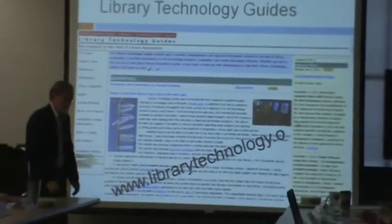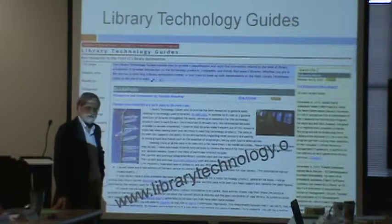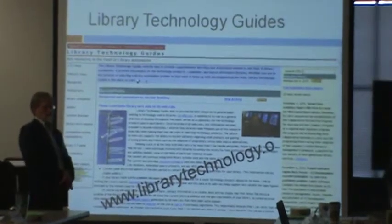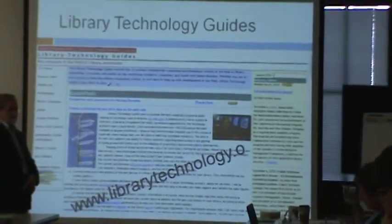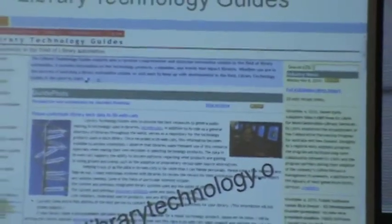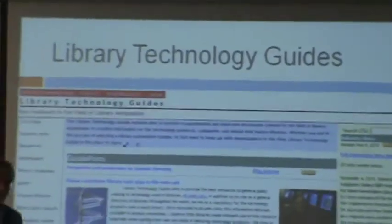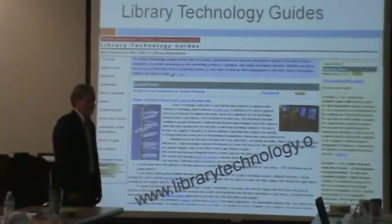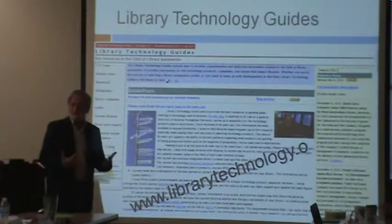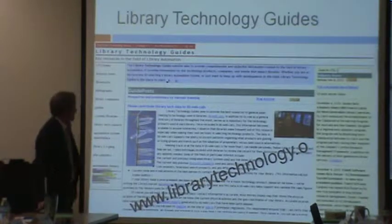Library Technology Guides is a website I've been working on since 1996. It has an accumulation of data about the library automation industry, even predating that — things like industry announcements going back to the 80s and before. I'm interested in the trends, the dynamics, and the history of the library automation industry: where have we been, where are we now, where are we going. Technology moves very quickly, and at every stage I've said things are moving faster than they ever had before.